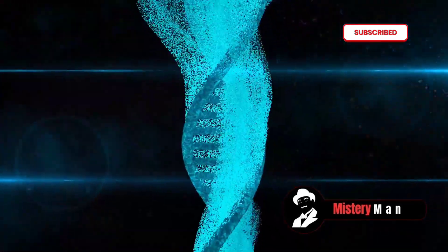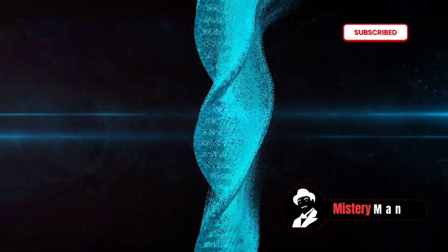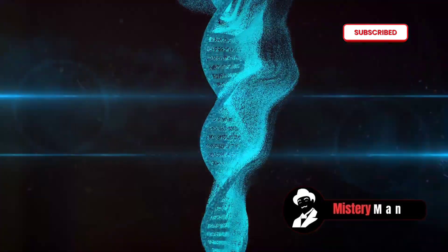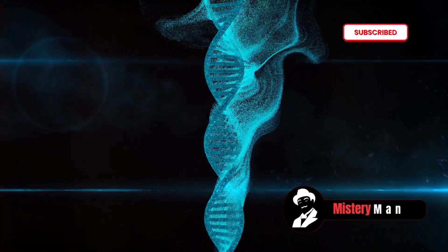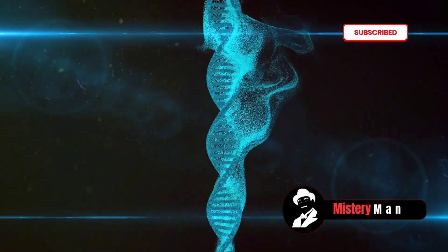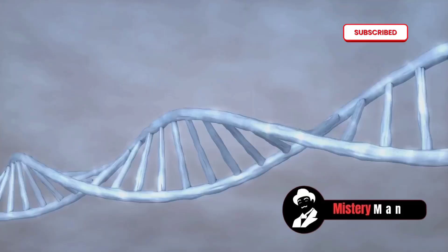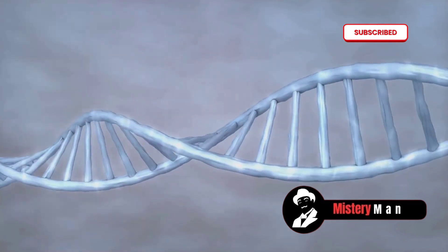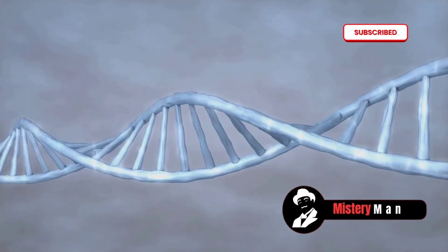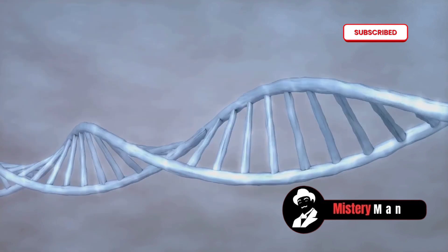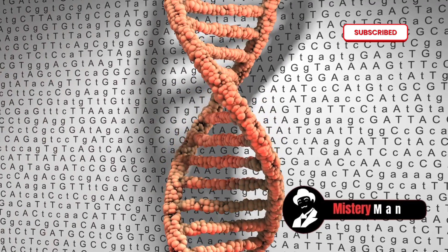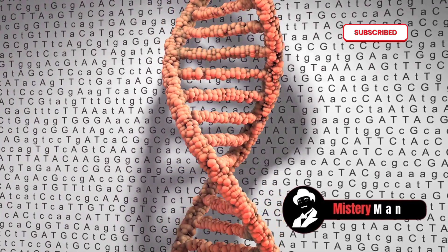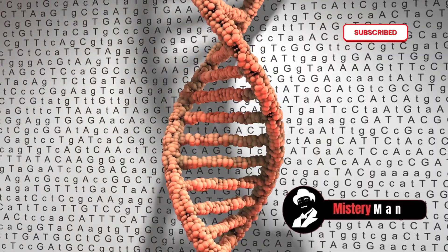The journey of decoding the human genome began with the ambitious Human Genome Project in the late 20th century. By 2003, scientists celebrated the mapping of nearly all human genes. Yet, despite this monumental achievement, the function of a significant fraction of these genes remained elusive. Dubbed the unknown, these are the genes that hide in the shadows, their roles in our biology unknown.